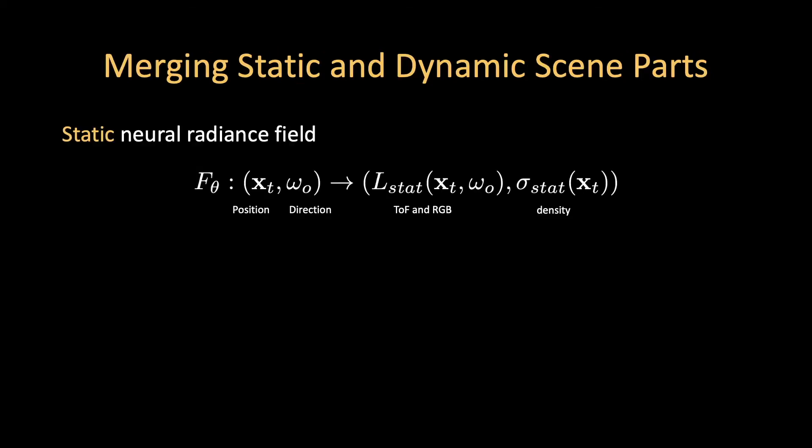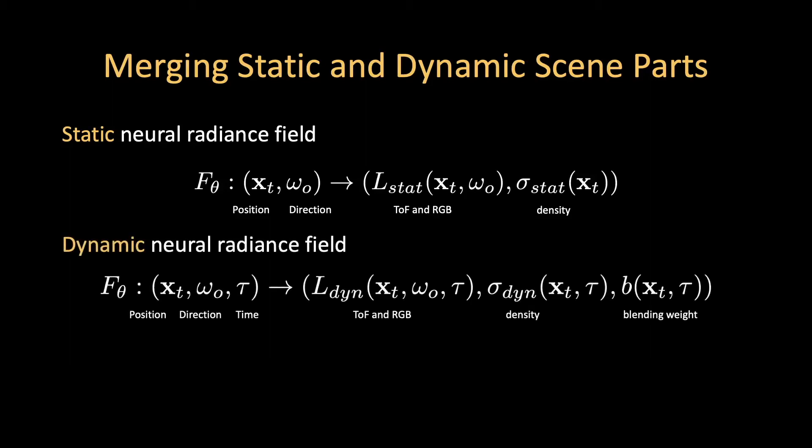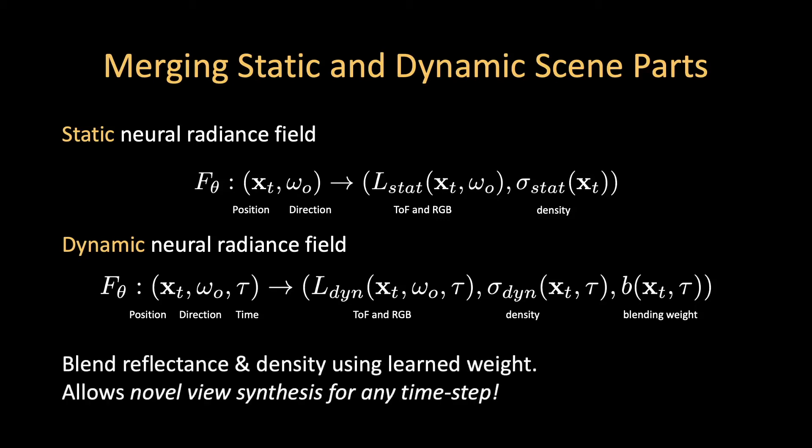We represent a dynamic radiance field as a linear combination of a network that captures static content and a time-dependent network that represents dynamic content. Both the static and dynamic networks model RGB intensity and time-of-flight reflectance. A learned blending weight is used to blend between the static and dynamic networks at every time step. Together, this allows for novel view synthesis for any time step.